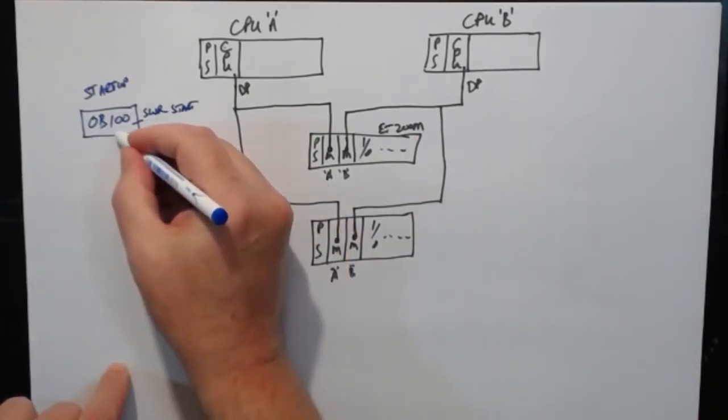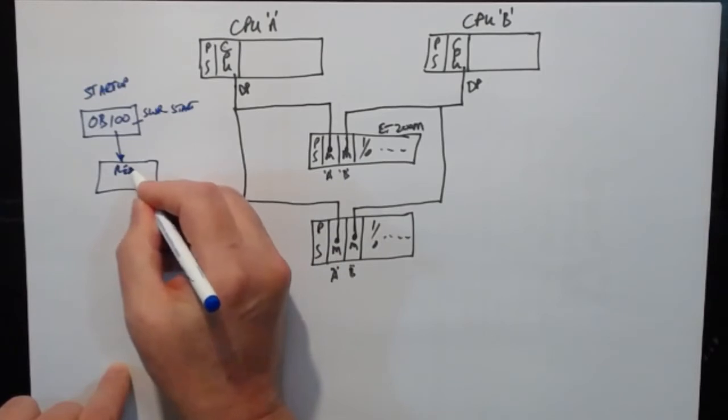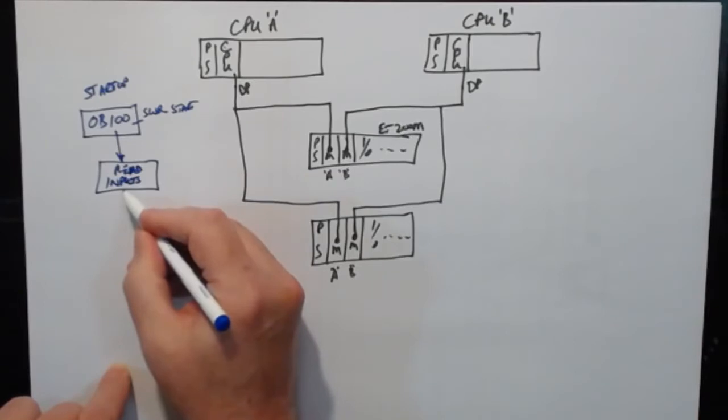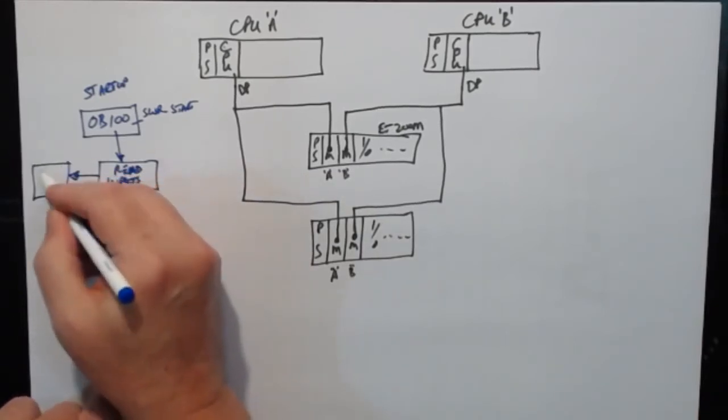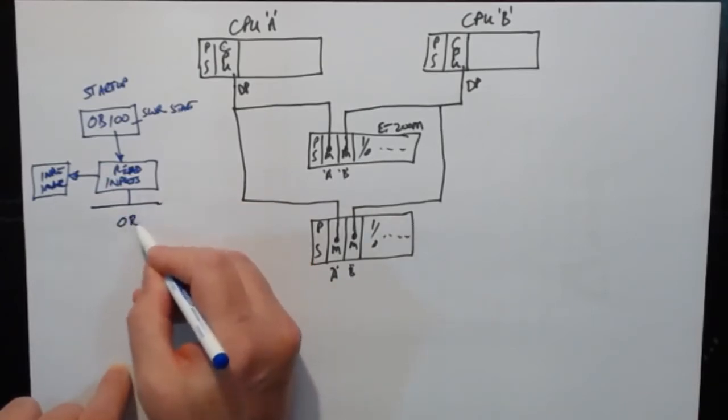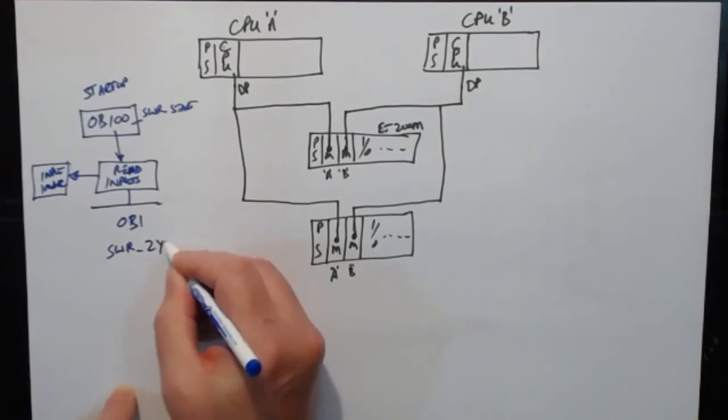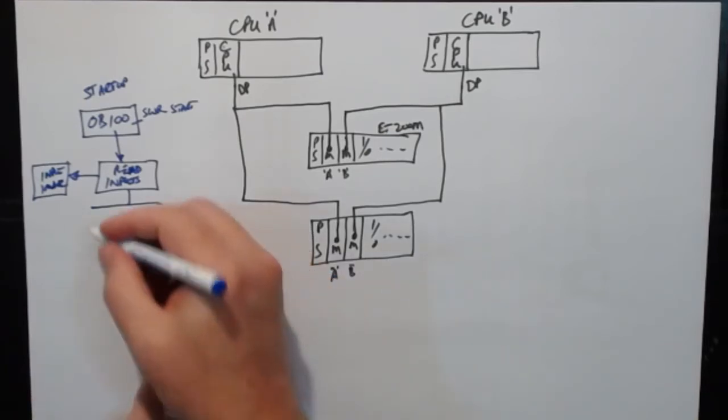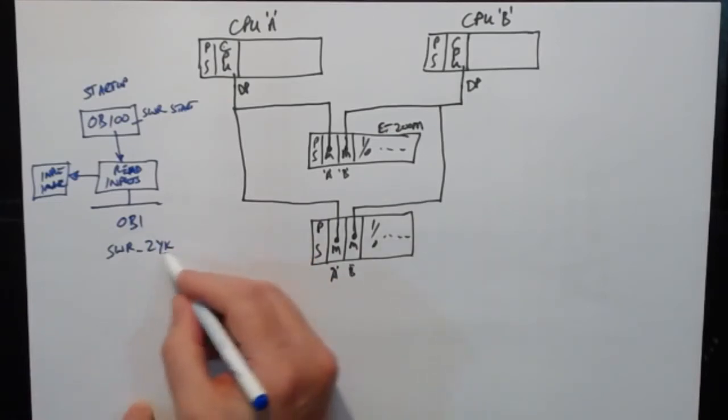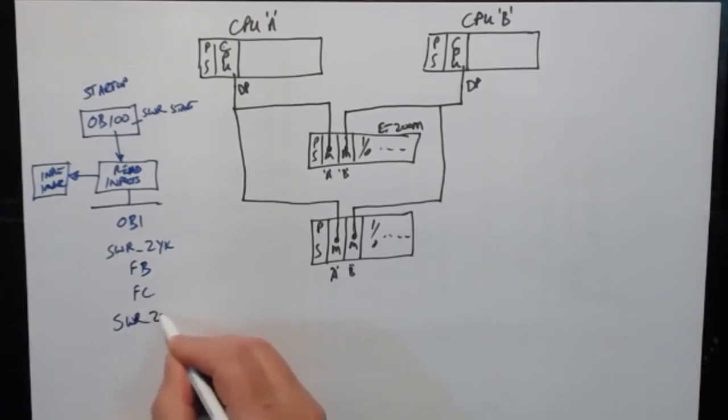From there, we then go into, we start our main loop. So we do read inputs, we write that into the input image. And then we drop into OB1. And in OB1 there we call a function called SWRZYK, ZIKLUS for German for cycle, so software redundancy cycle. And in between calls to this function block, we have our redundant program. So we have function blocks, function calls, control blocks, etc. And then we call SWRZYK again.